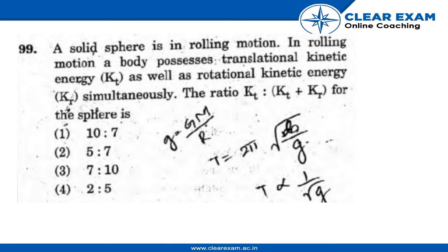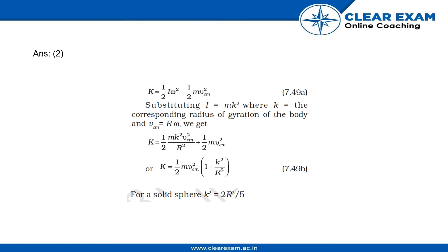The options are: 10 is to 7, 5 is to 7, 7 is to 10, and 2 is to 5. Moving to the solution, the kinetic energy of translation of the body is represented by mv²/2.